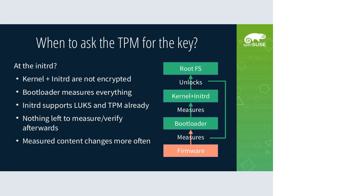A different approach is to do the unlocking in the initrd. The advantage is that kernel and initrd are not encrypted, and the bootloader just measures everything without doing any verification itself — it just tells the TPM about everything it does. If there's a malicious theme used to gain code execution in GRUB, it doesn't matter because the TPM was already told it's using a different theme than expected and will refuse to give the key. The initrd already has support for LUKS and TPM handling, so we wouldn't need missing bootloader support. There's also nothing left to measure after the bootloader — the system is up and running, and we just need to make sure the system protects the key with a secure screen lock.